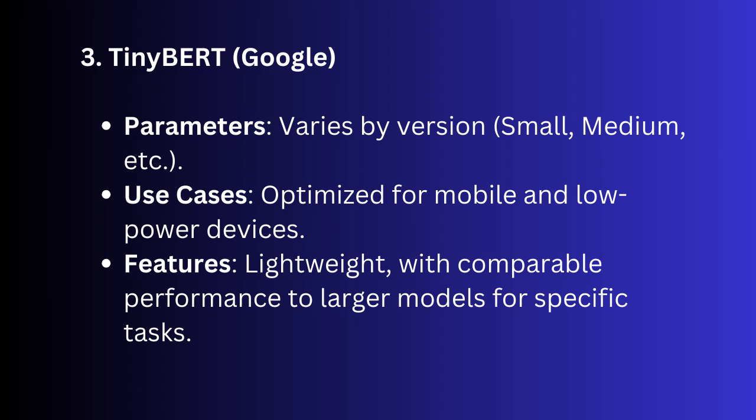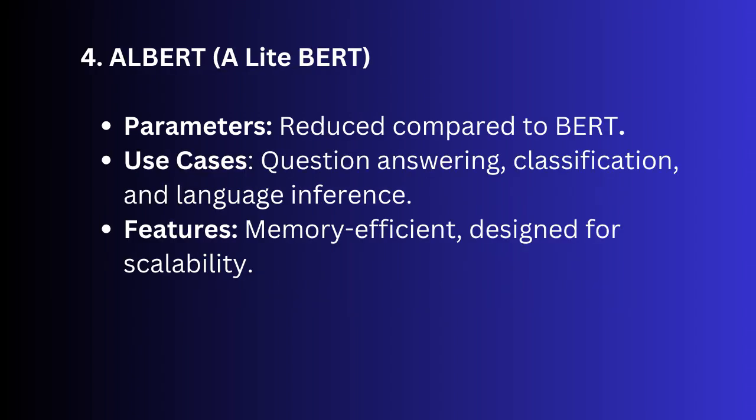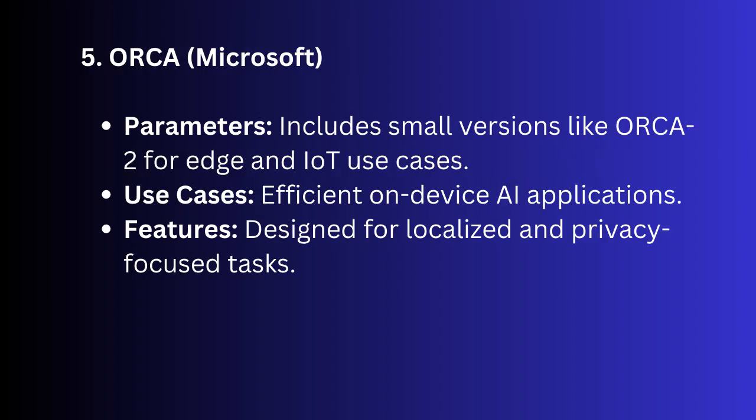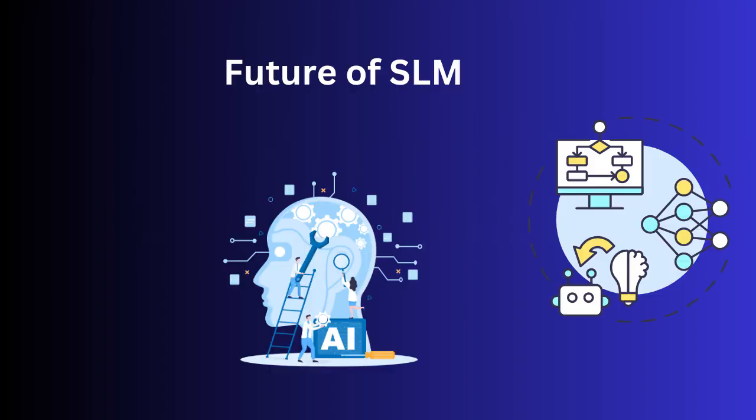Next is ALBERT (A Lite BERT), with reduced parameters compared to BERT, used for question answering, classification, and language inference. Finally, Orca from Microsoft includes small versions like Orca 2, targeting edge and IoT use cases for efficient on-device AI applications.